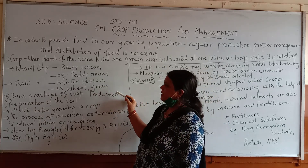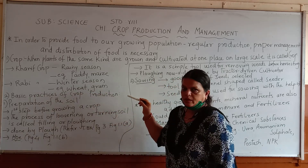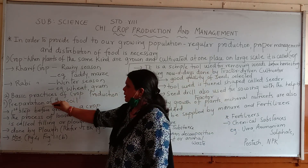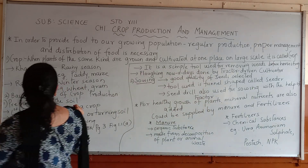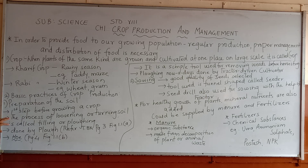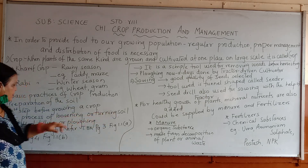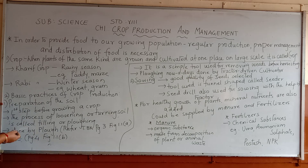Now the second point we discuss is basic practices of crop production. The first point is preparation of the soil. The first step before growing a crop — the process of loosening or turning the soil up and down is called tilling or plowing.